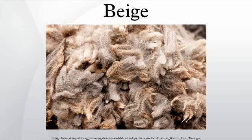Beige is a term used for a range of pale brownish or yellowish colors. It is variously described as a pale sandy fawn color, a grayish tan, a light grayish yellowish brown, or a pale to grayish yellow. It takes its name from the French word for the color of natural wool. It has come to be used to describe a variety of light tints chosen for their neutral or pale warm appearance.